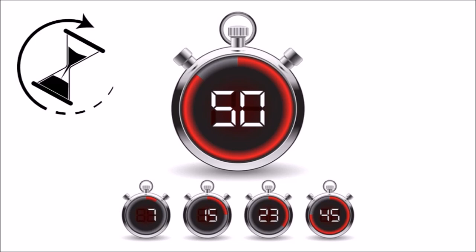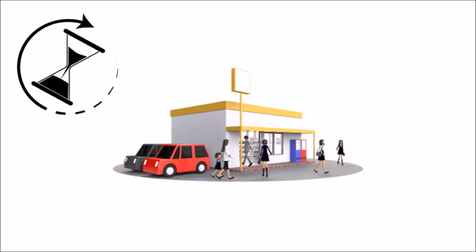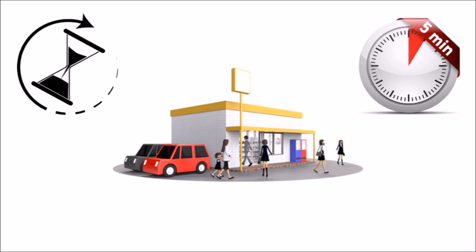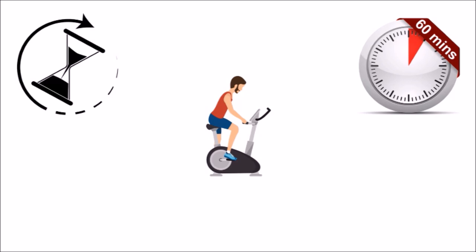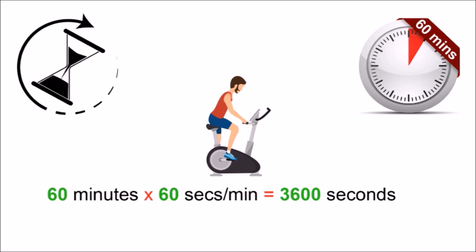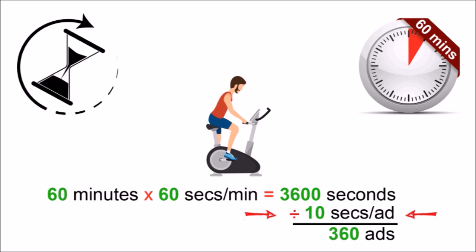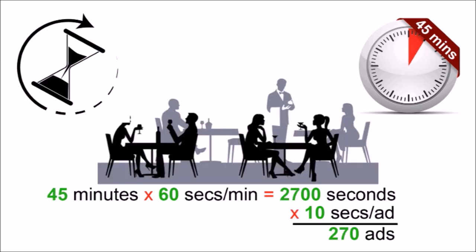If you are placing ads in a convenience store, the average amount of time one spends is about 5 minutes. 5 minutes times 60 seconds equals 300 seconds. Divide 300 seconds by 10 seconds per ad equals 30 ads — you can fit 30 ads in a convenience store. Whereas in a gym, the average person spends 60 minutes, so 3,600 seconds divided by 10 seconds equals 360 ads. In a restaurant, the average dwell time is 45 minutes.